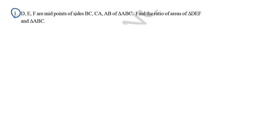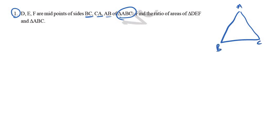Starting with the first question: D, E, F are the midpoints of BC, CA, and AB of triangle ABC. So we draw triangle ABC. The midpoint of BC is D, the midpoint of CA is E, and the midpoint of AB is F. These are the midpoints of AB, BC, and AC.